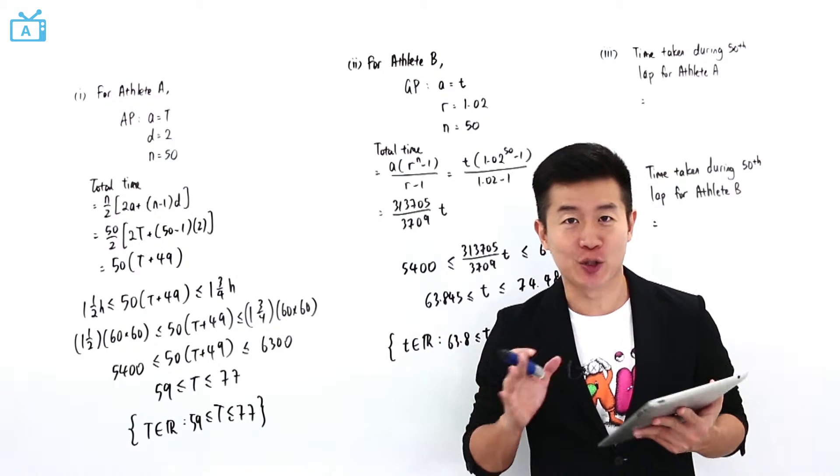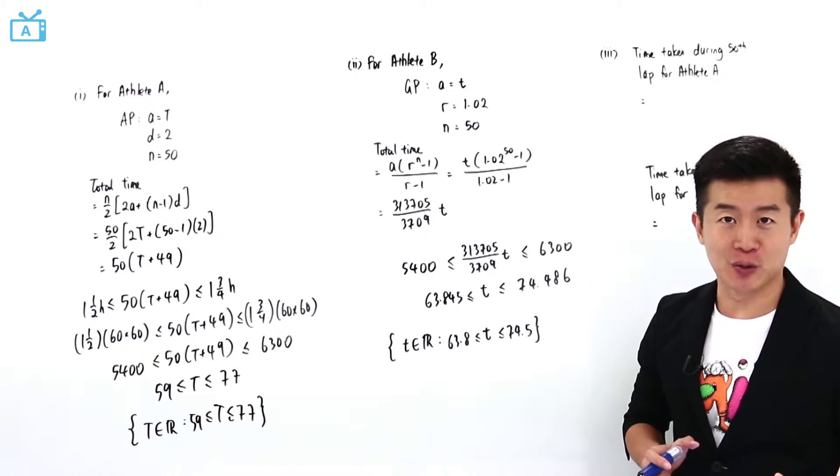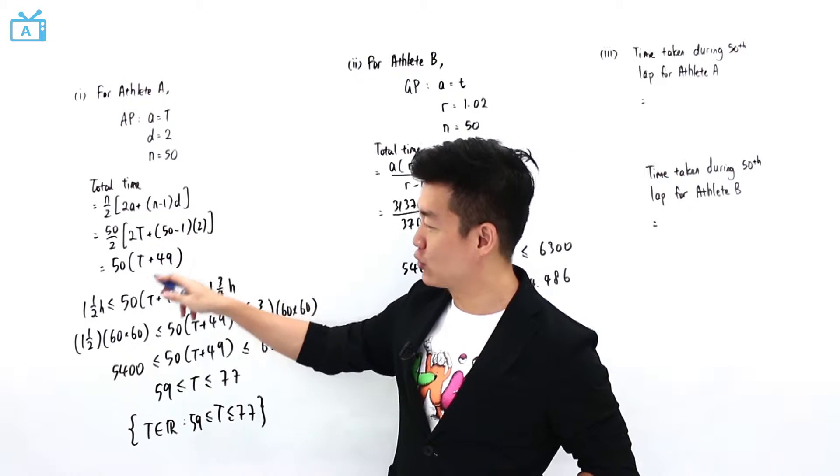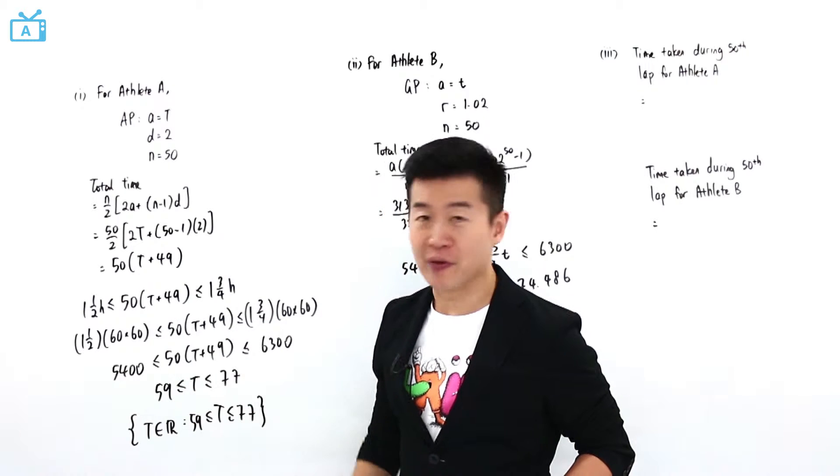Now for both athletes, they're going to be completing the run in one and a half hours. If I match the total time taken by athlete A to one and a half hours, T is going to be equal to 59.